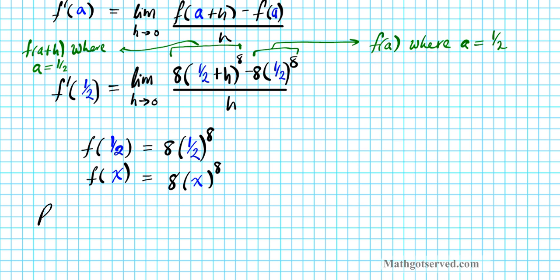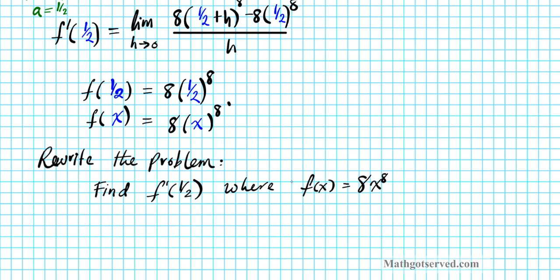So let's go ahead and rewrite the problem. So we have to find f prime of 1 half where f of x is equal to 8x to the 8th. We're going to evaluate at x equals 1 half.